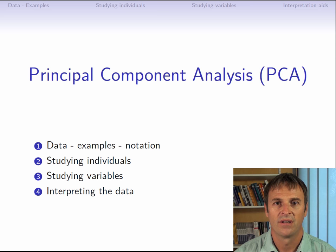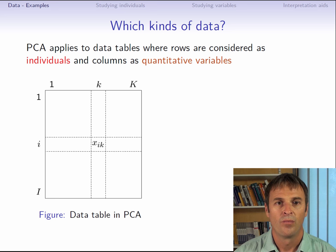So what kind of data are we looking at? Principal component analysis, also known as PCA, applies to data tables where rows can be considered as individuals and columns as quantitative variables. Let x_ik be the value taken by individual i for variable k. i varies from 1 to capital I, the number of individuals, and k from 1 to capital K, the number of variables.